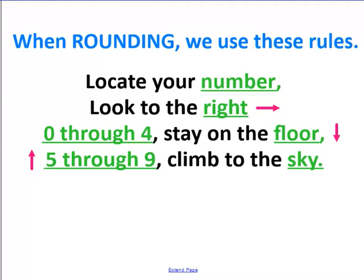When you use rounding, there are a lot of different acronyms or poems or sayings that you can use to remember how to round. This is just one of them, but if you find one that works better for you, by all means use it as long as the terminology is accurate. Basically, the rules are: locate your number — that's your place value — look to the right; 0 through 4, stay on the floor; 5 through 9, climb to the sky.